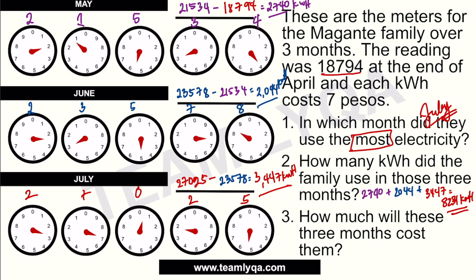Now that we know the total, question 3 is easy: how much will these three months cost them? We take 8,231 kilowatt hours and multiply by the given rate of 7 pesos per kilowatt hour, which gives us 57,617 pesos. The key is to read the questions carefully, find the relevant information from the given data, apply your meter-reading knowledge to get the differences per month, and arrive at the correct answer one step at a time.